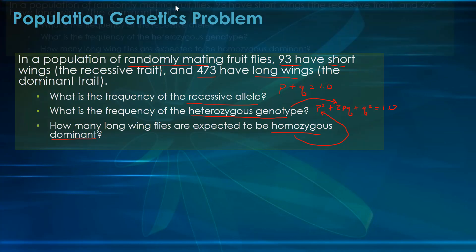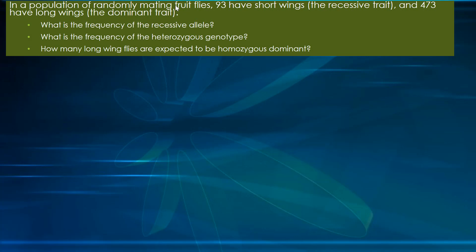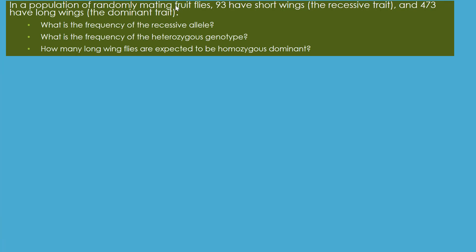Now let's solve it. We need to identify our alleles and find q using q squared. Once we get q squared, we can get q. Once we've got q, we can find p, because p plus q equals 1. Then we'll plug those values into the Hardy-Weinberg equations.